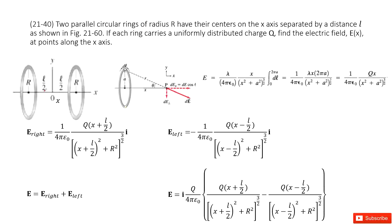The rings have their centers on the x-axis and the distance between these two parallel circular rings is L, so this half is L over 2, this half is L over 2. Each ring carries a uniformly distributed charge Q. We need to find the electric field at points along the x-axis. We consider a point at location x, so the distance between the center and this position is x.